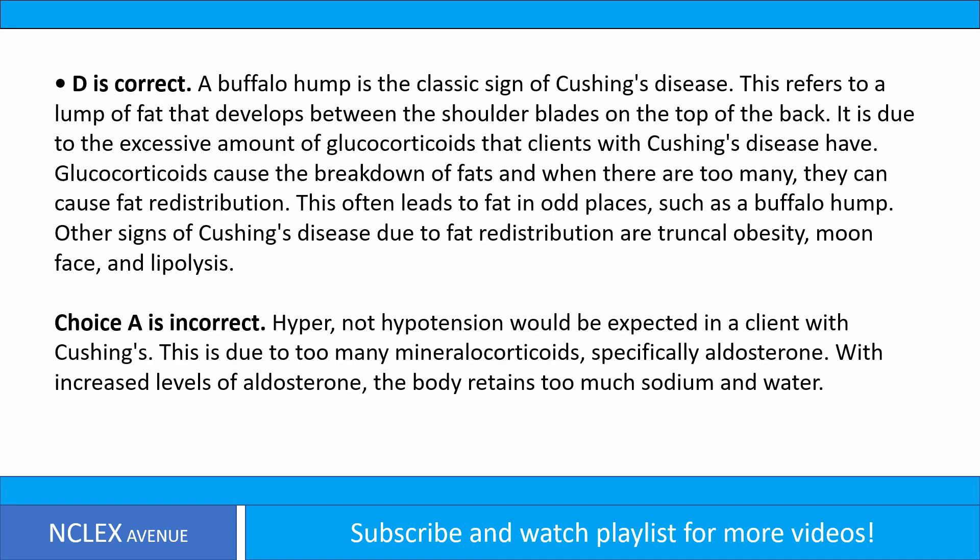D is correct. A buffalo hump is the classic sign of Cushing's disease. This refers to a lump of fat that develops between the shoulder blades on the top of the back. It is due to the excessive amount of glucocorticoids that clients with Cushing's disease have. Glucocorticoids cause the breakdown of fats, and when there are too many, they can cause fat redistribution. This often leads to fat in odd places, such as a buffalo hump. Other signs of Cushing's disease due to fat redistribution are truncal obesity, moon face, and lipodystrophy.